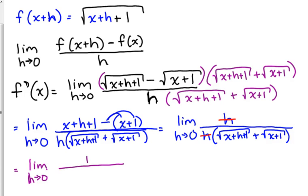We've got the limit as h approaches 0. We haven't evaluated the limit yet. Of 1 over the square root of x plus h plus 1 plus the square root of x plus 1.